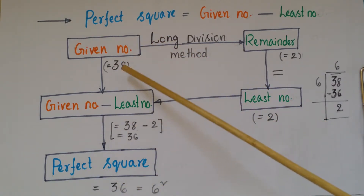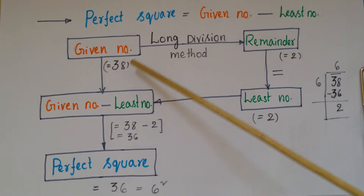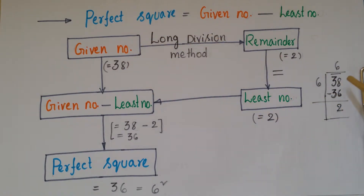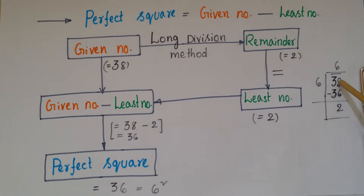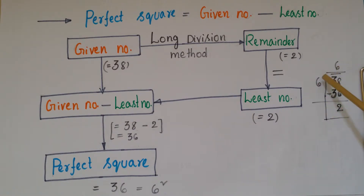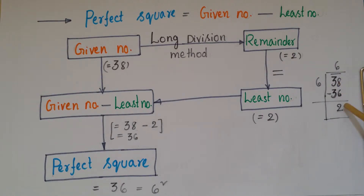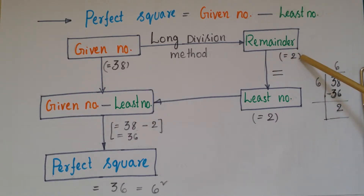Now I will explain through a small example. Suppose the given number is 38. If we do the long division method for 38, just place a bar — because 38 has two digits. A square number less than or equal to 38 is 36, which we can write as 6 squared. Write 6 in the divisor and quotient place, then subtract 36 from 38 to get a remainder of 2.